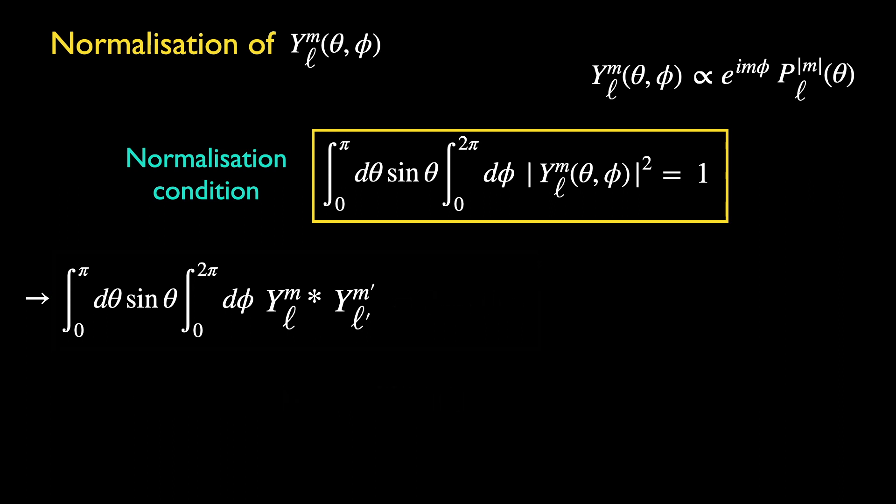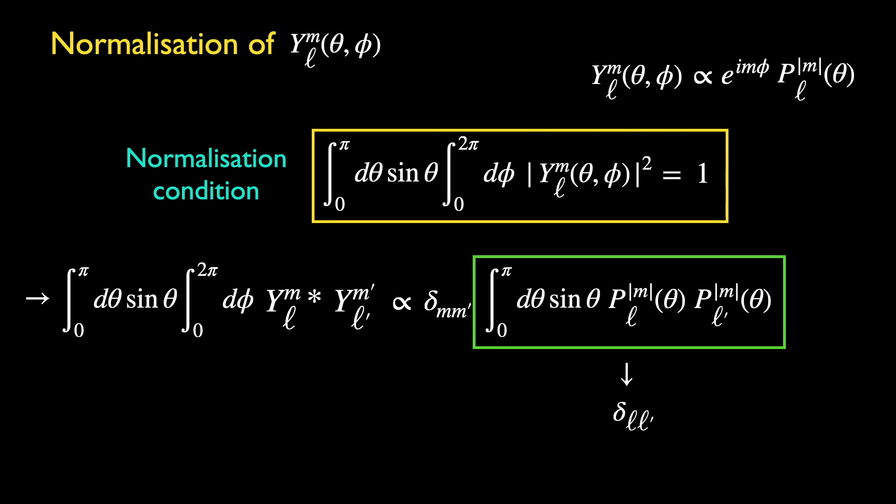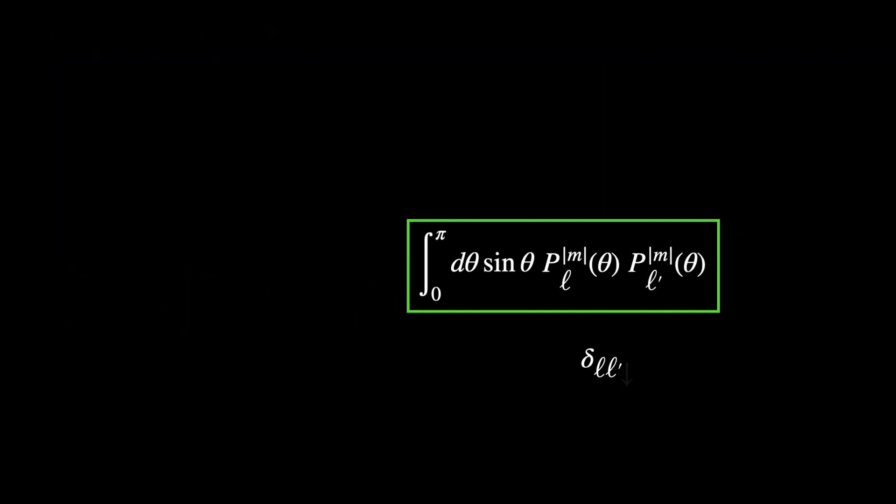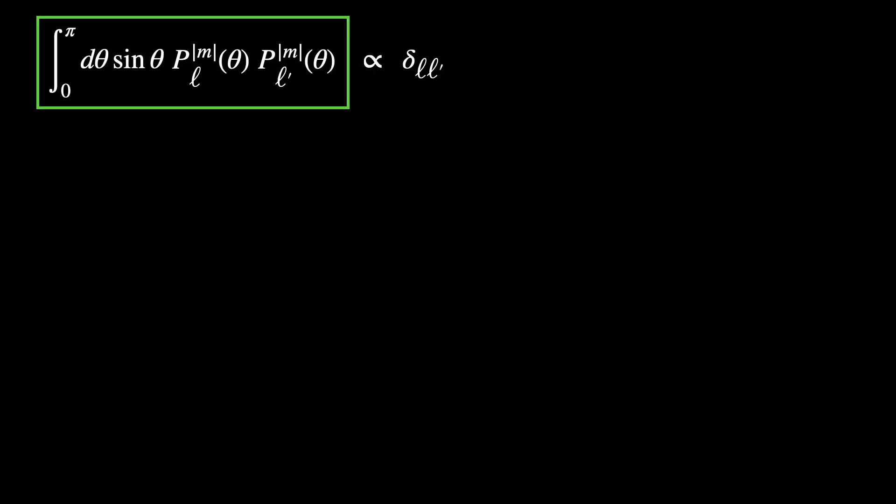Since we have just shown that the integral over phi gives the delta for m's, we must now show that the remaining theta integral results in the delta for L's. Note that we can set both m's in the functions p to be equal since this integral is multiplied by the delta of m's.